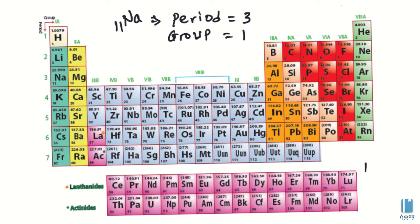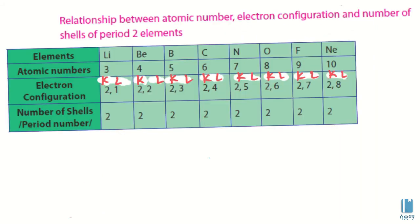A period is called horizontal because it is a horizontal row. The group is a vertical column. After all, electrons in the same group are equal to each other. The end period gives the number of elements in that period.